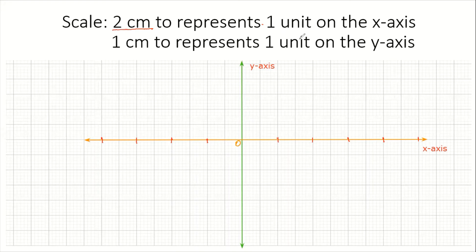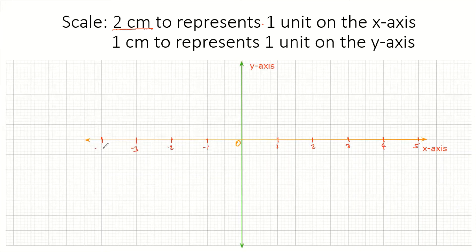One unit suggests that we are counting by one, so for every two centimeters we put in one unit. So if this is zero, the first stroke has to be one, then the second two, three, four, five. On the negative x-axis it's going to be negative one, negative two, negative three, and negative four. That's how you put on the scale on the x-axis that says two centimeters to represent one unit.